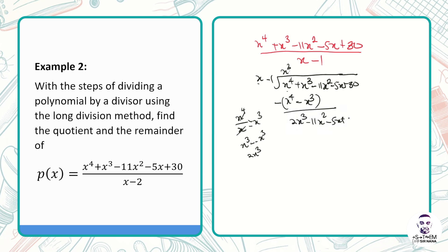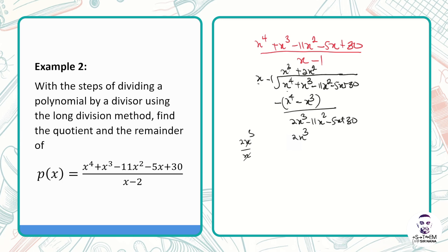We go through the division process again. We take 2x³ divided by x, which gives us 2x². We multiply 2x² by x - 1, giving us 2x³ - 2x². We subtract again: 2x³ - 2x³ cancels, and -11x² minus (-2x²) gives us -11x² + 2x², which equals -9x².